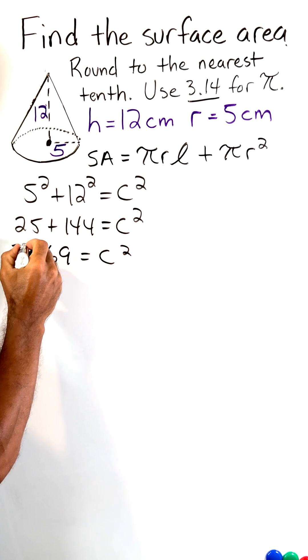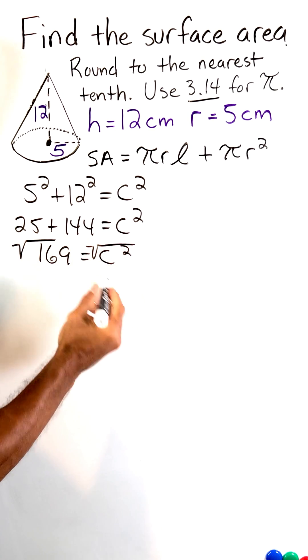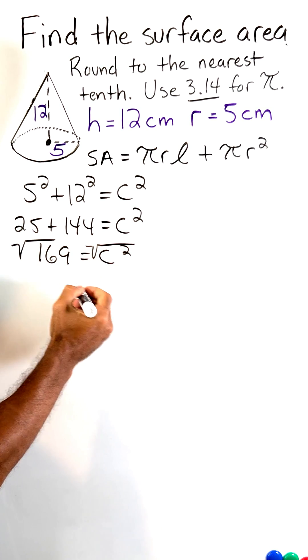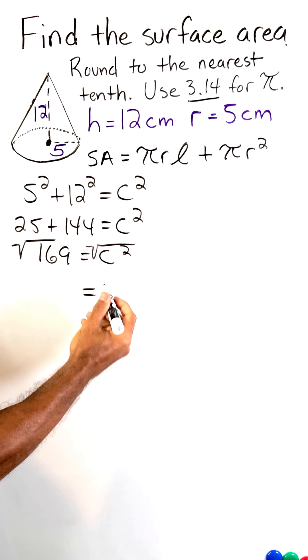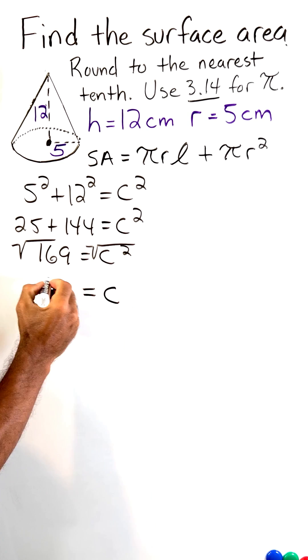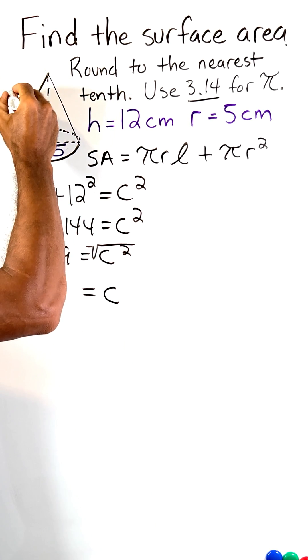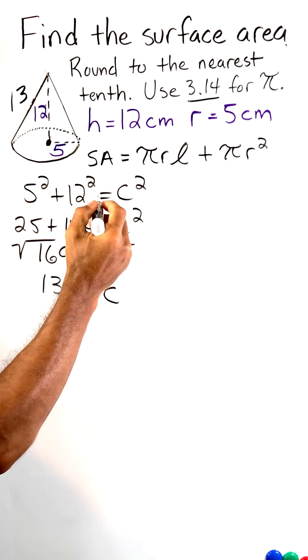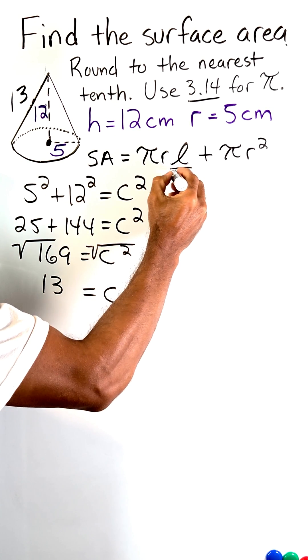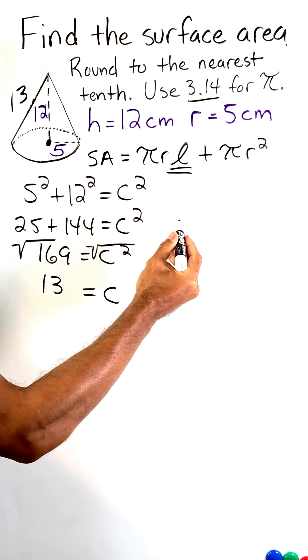And we take the square root of 169, and that would equal positive or negative 13. But because distance can only be positive, C is equal to 13 centimeters. So I'm going to go ahead and label this slant height 13. So now we know what we have to substitute for L into the equation.